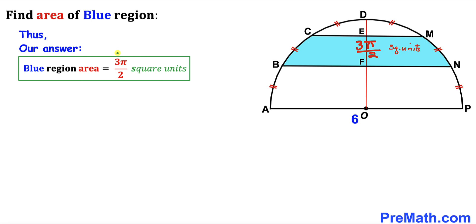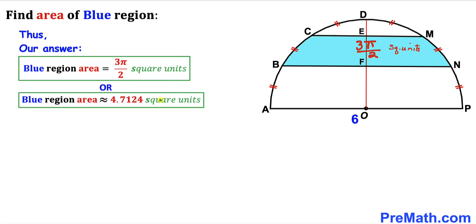After all the calculations, the area of the blue shaded region turns out to be 3π/2 square units. In decimal form, this is approximately 4.7124 square units. That's our final answer. Thanks for watching, and please don't forget to subscribe to my channel for more exciting videos. Bye!